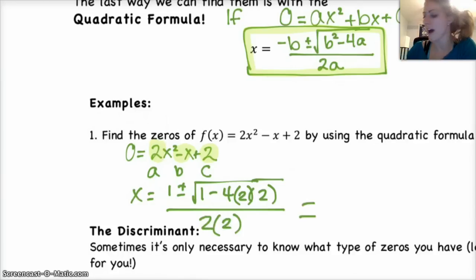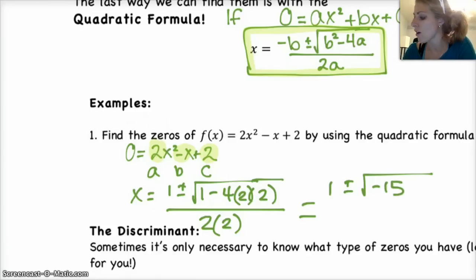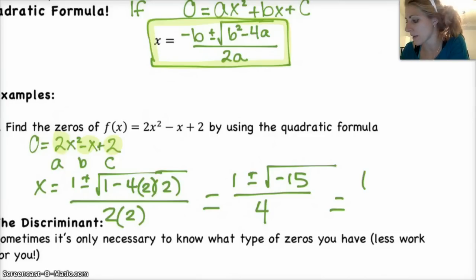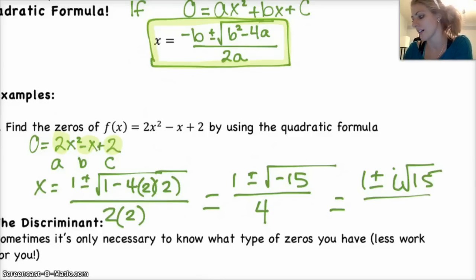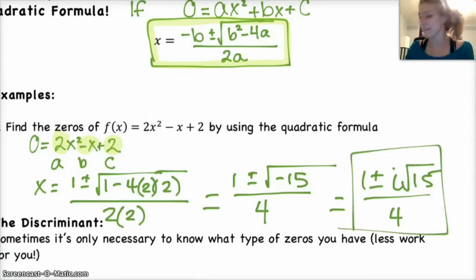You have 1 plus or minus the square root of 1 minus 4 times 2 times 2, so that's 16 — giving you 1 minus 16, which is negative 15, over 4. Simplifying further: the square root of a negative number gives you 1 plus or minus i times the square root of 15. Since 15 doesn't have any perfect squares in it, you leave it as 15. So your zeros are (1 + i√15)/4 and (1 − i√15)/4. Box it and you're done!